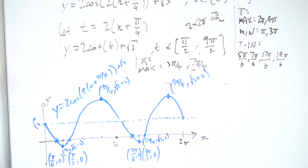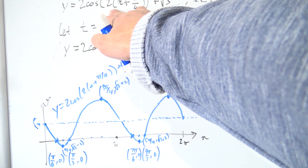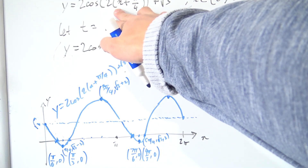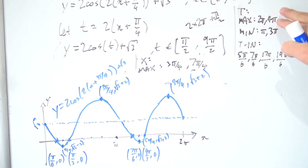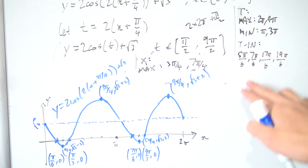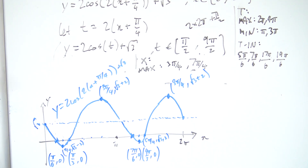So all of this is really my thought process on graphing these more complicated trig graphs. Whenever I see this kind of equation, I do a substitution, change the domain, figure out all the maximums, minimums, and intercepts, and then bring it back into x. I hope you guys enjoyed it, and I'll see everyone next time.